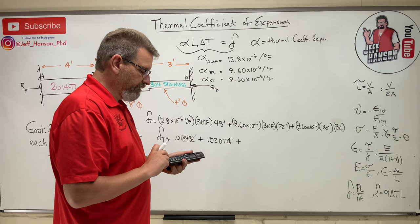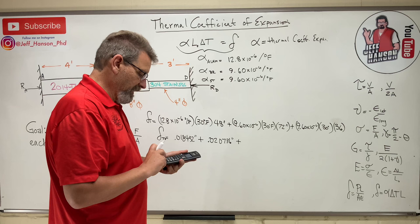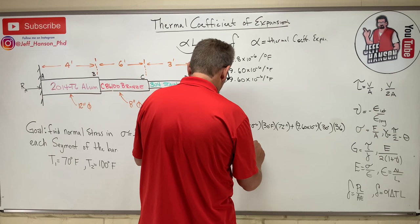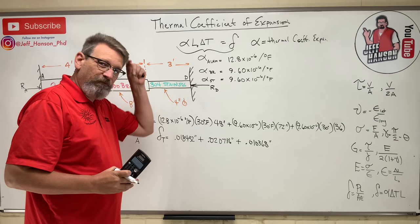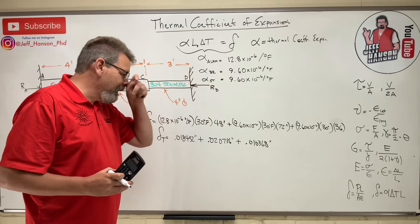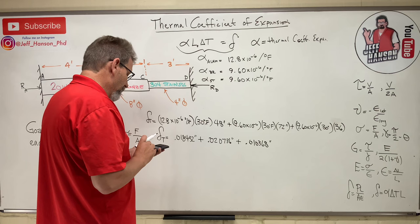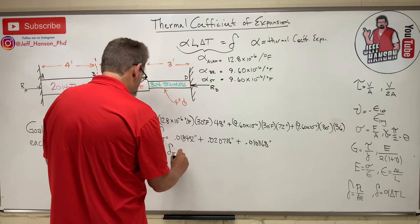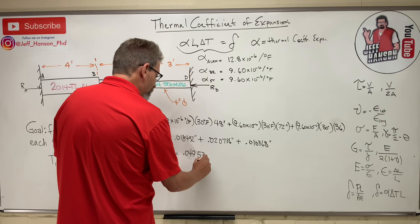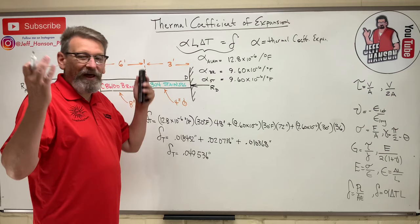Adding those up: 0.010368 plus 0.020736 plus 0.018432 equals delta total = 0.049536 inches. Leave lots of decimals and round at the end. So without the wall there, the whole bar has grown that much and is now displaced.